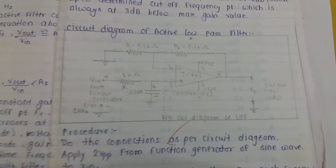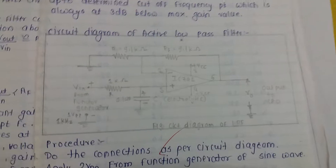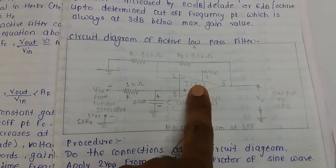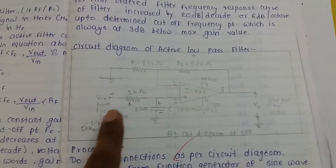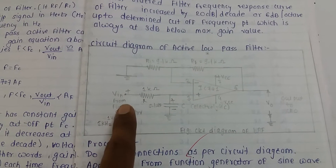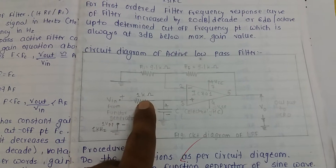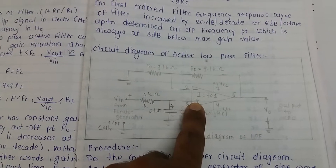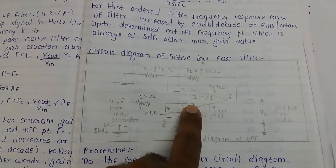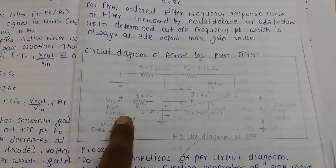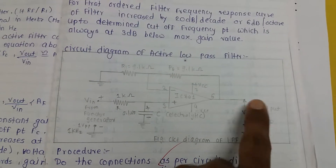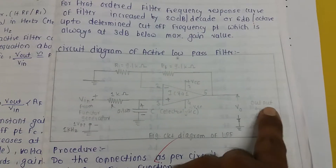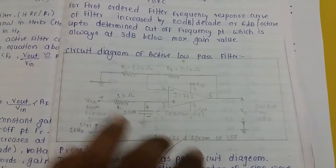Now looking at the practical circuit diagram — this uses IC 741. It has a minus terminal and a plus terminal, two inputs. We give the input from a function generator to the plus terminal, which is the non-inverting input terminal. The output is observed through the CRO.